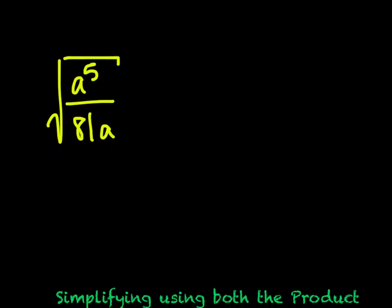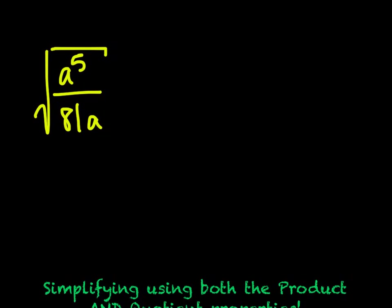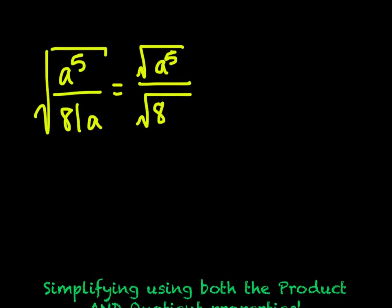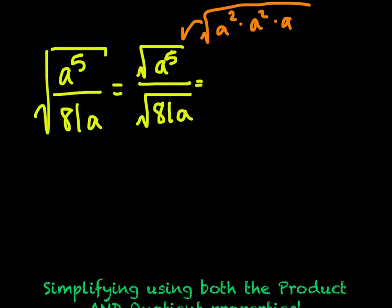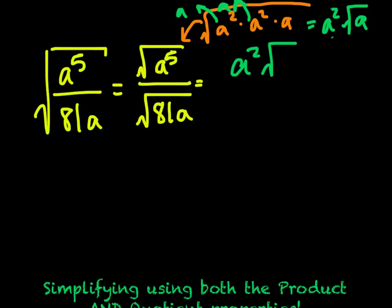Let's look at the next one: the square root of a to the 5th divided by 81a. Let's first apply the quotient property and say the square root of a to the 5th over the square root of 81a. For the square root of a to the 5th, just like we did with x's, we rewrite it as a squared times a squared times a, all under a square root sign. So we get a coming out, another a coming out, and an a left inside — that equals a squared times the square root of a on top.